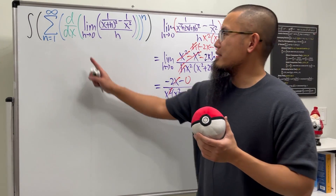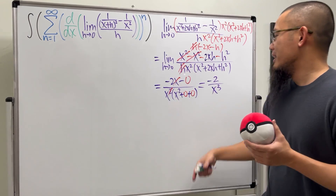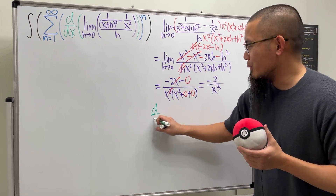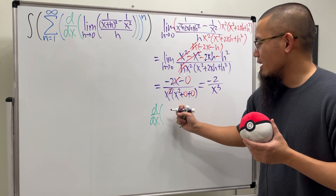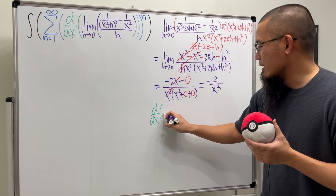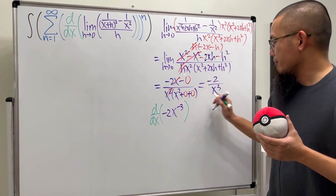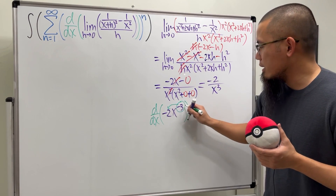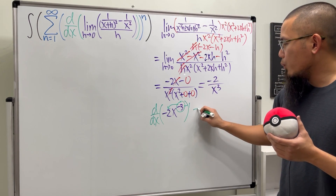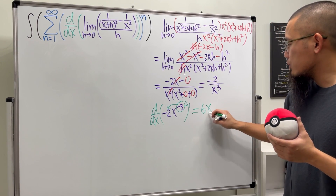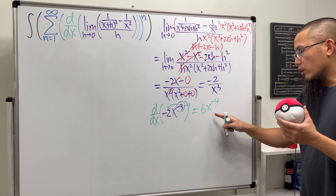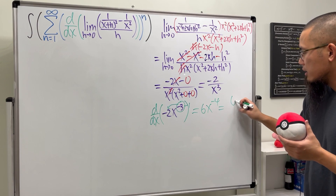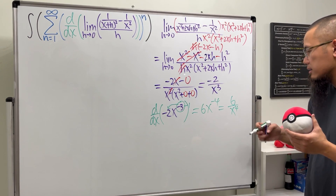Next, we will differentiate the result we got earlier. We have d/dx of negative 2x to the negative 3. Using the power rule, bring the power to the front and subtract 1: we get positive 6 times x to the negative 4. We can rewrite x to the negative 4 in the denominator to make it positive, giving us 6 over x to the fourth power.